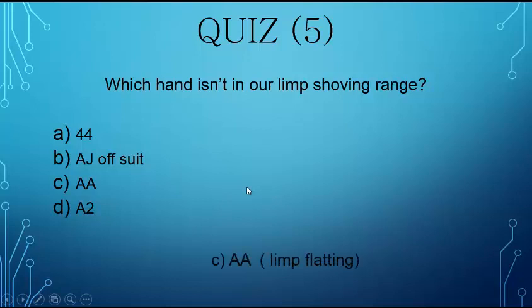And the answer is going to be pocket aces. We should be limp flatting that hand. So obviously pocket fours is a great hand to have in our limp shoving range. Versus recreationals, we should just be open shoving this.